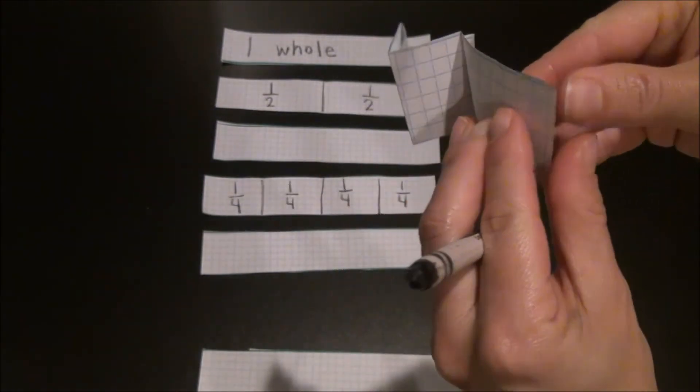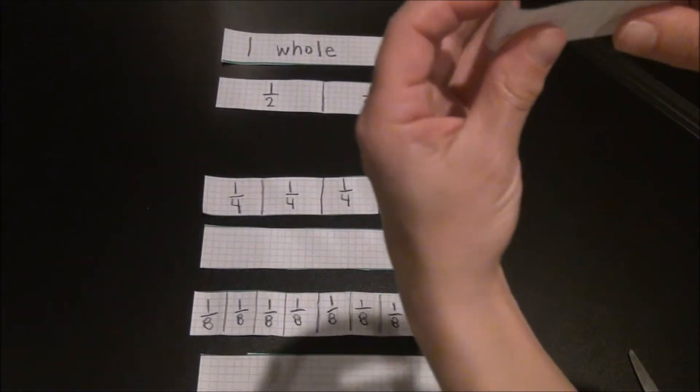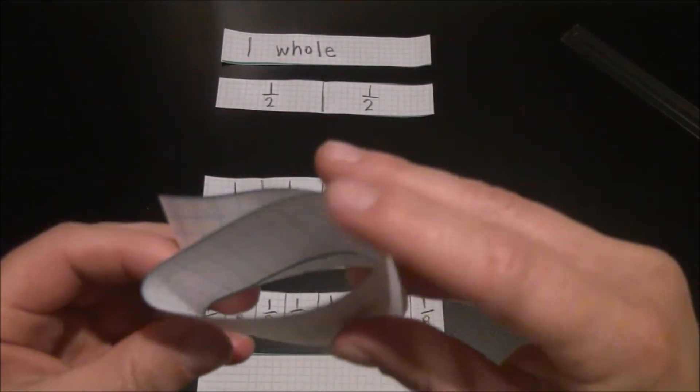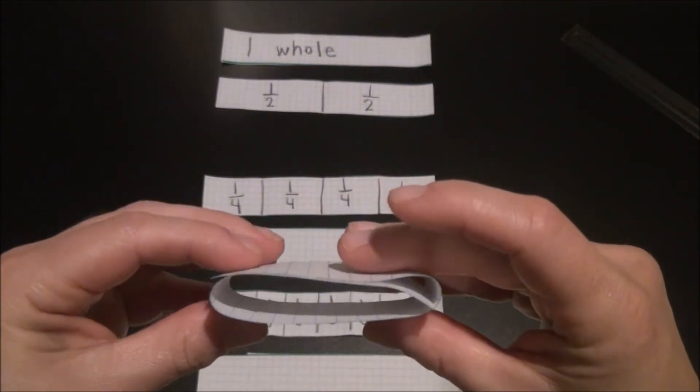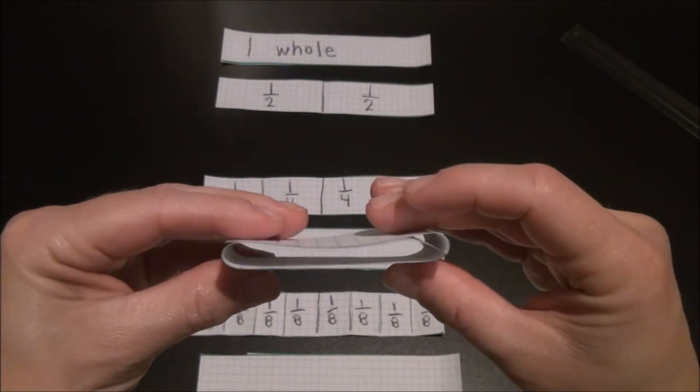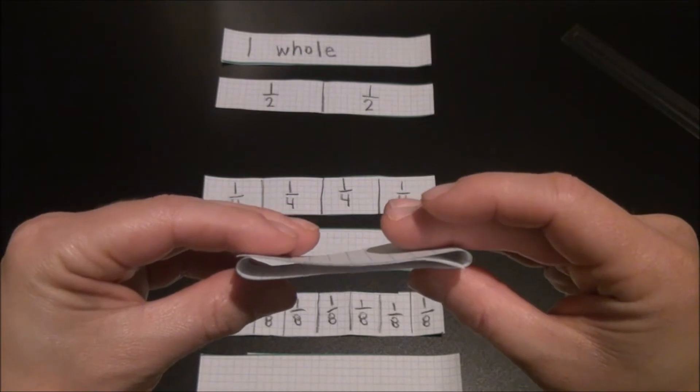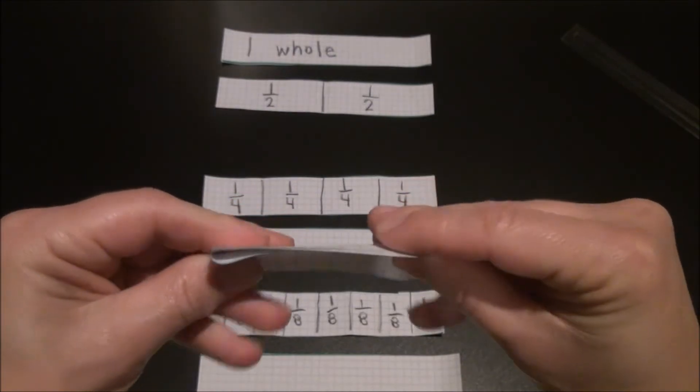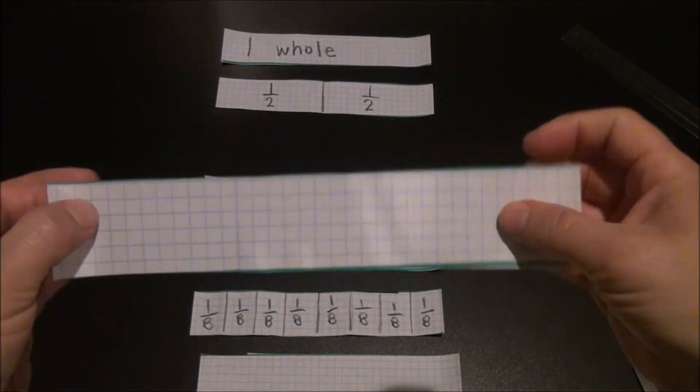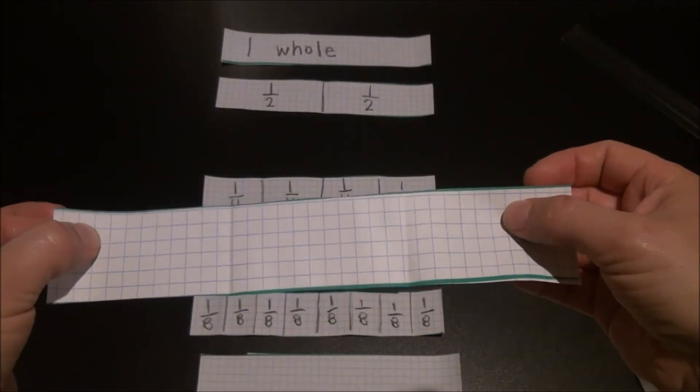To fold thirds, imagine a burrito. Try to get each part of that burrito as equal as possible so you can see one, two, three parts to that burrito. Once each part of that burrito is equal in size, pinch it down so you have your folds. And there are your thirds. Be sure to trace your folds and label your parts.